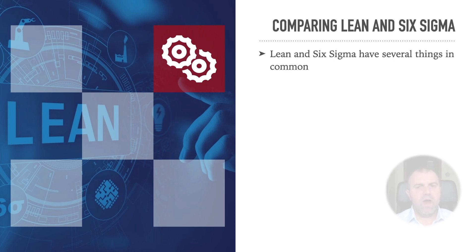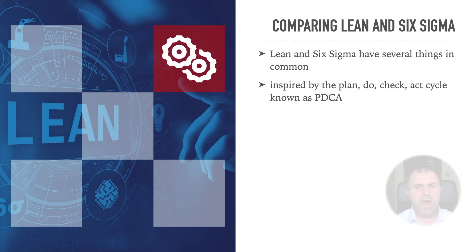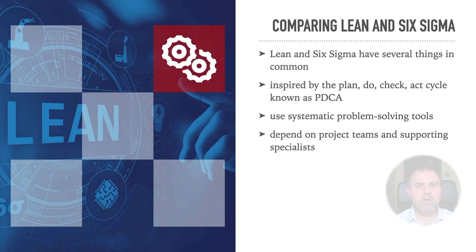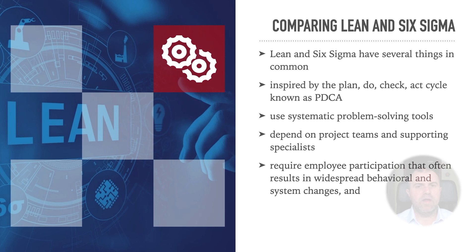While Lean and Six Sigma evolve from different paths, the two methodologies have several things in common. Both are inspired by the Plan, Do, Check, Act cycle known as PDCA. Both use systematic problem-solving tools, depend on project teams and supporting specialists, and require employee participation that often results in widespread behavior and system changes. And both deliver significant bottom-line benefits.